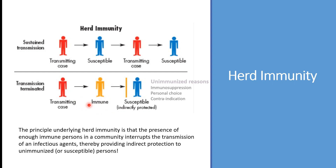In this cartoon, if there is no herd immunity, this is a sustained transmission — a transmitting case infects a susceptible case, which transmits it to another, and the chain continues. We can break this by having an immune person in the chain. When this person contacts an infected case, they don't get it, and thus don't transmit it to another susceptible person. The principle underlying herd immunity is that enough immune persons in the community interrupts transmission of an infectious agent, providing indirect protection to unimmunized or susceptible persons.